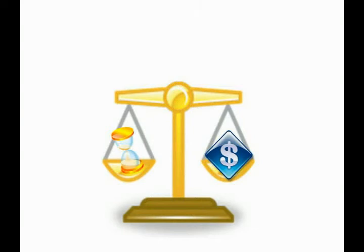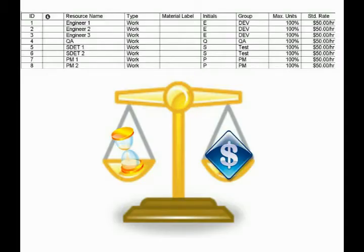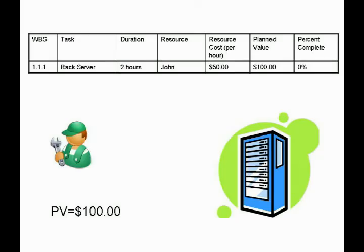Each task is assigned a duration, not a dollar amount. But thanks to the transitive property of time equals money, you arrive at the monetary value for each task. You can do this by loading a burdened hourly rate for the resources assigned to the task and multiplying it by the time scheduled. For example, a server racking task allocated two hours for a resource with a burdened rate of $50 an hour gives a planned value of $100.